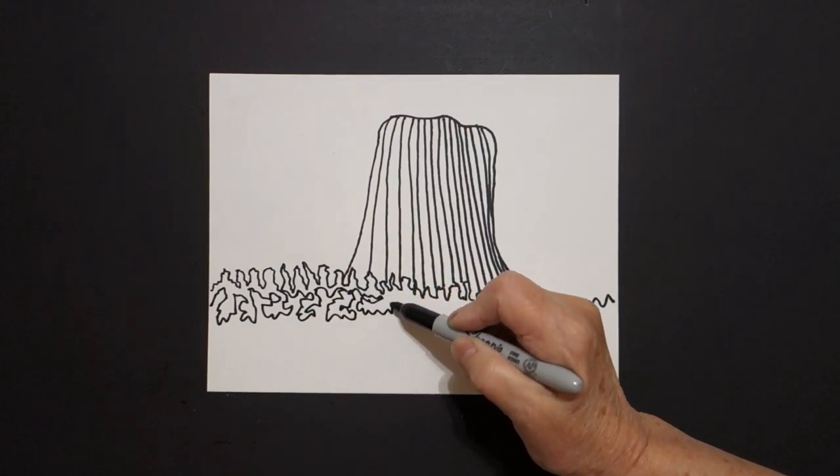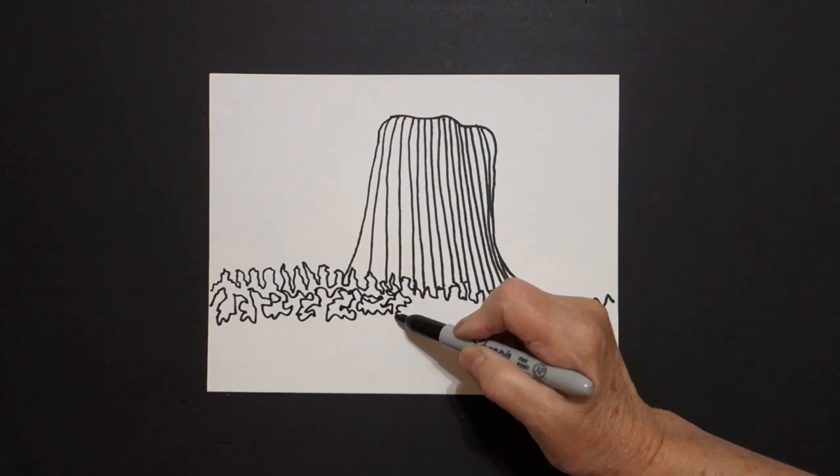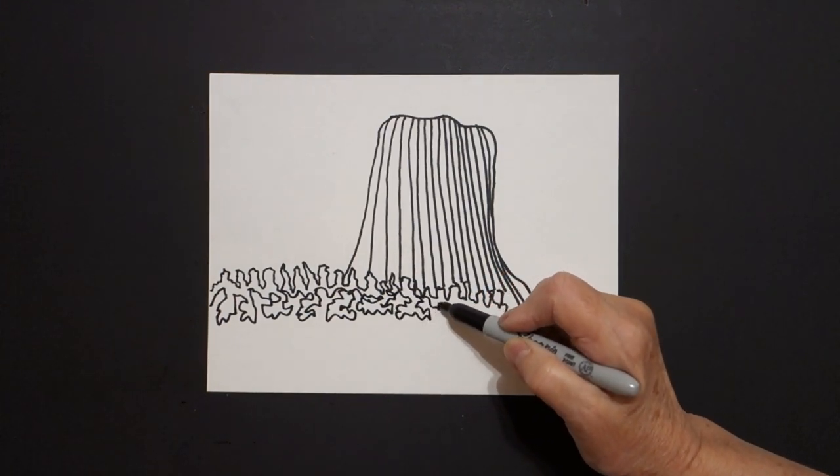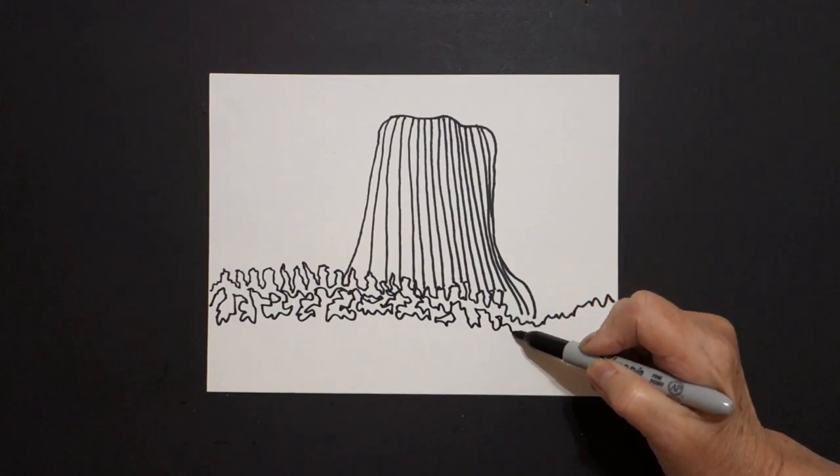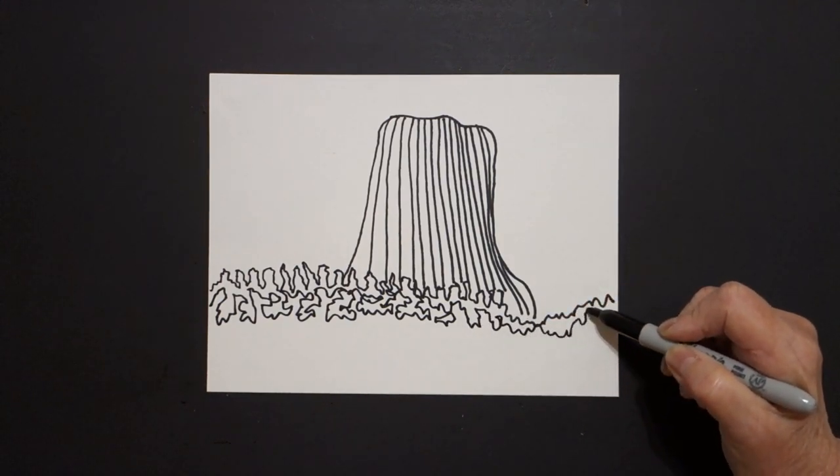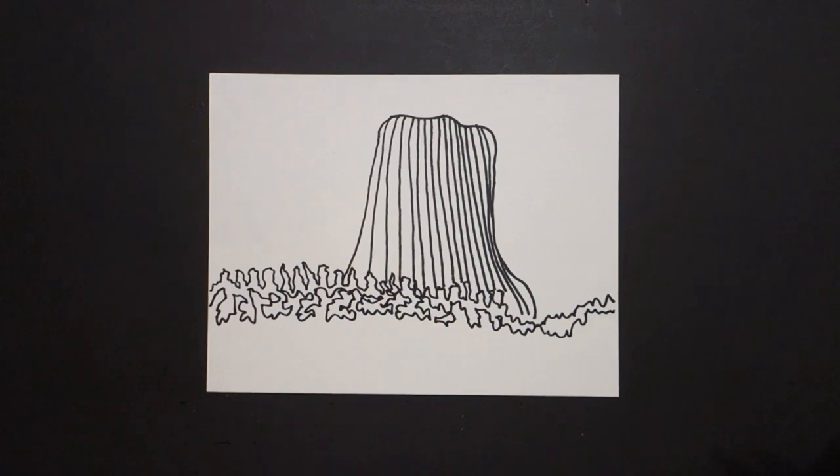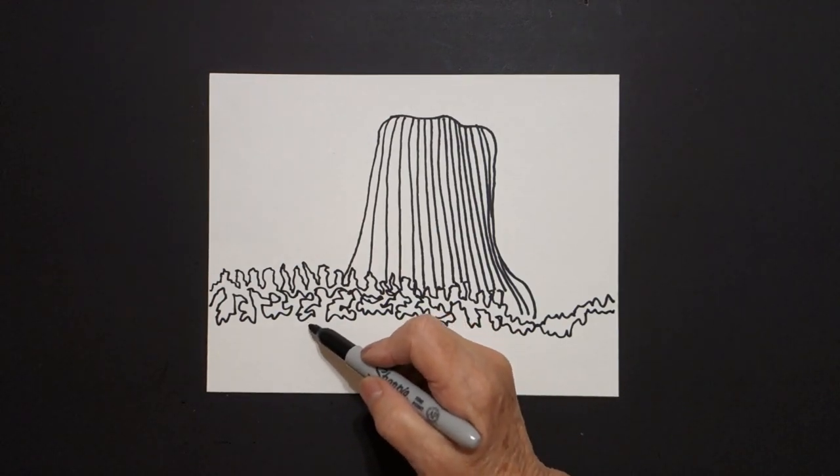And it's basically wavy lines, curved lines, back and forth, zigzag, up and down, up and over, keep going, keep going to the edge of the paper. Now, come down,